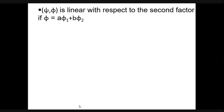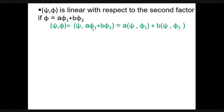Another property is that the scalar product (psi, phi) is linear with respect to the second factor phi. If the second factor is a linear combination A*phi1 plus B*phi2, then the scalar product (psi, A*phi1 plus B*phi2) expands to A*(psi, phi1) plus B*(psi, phi2). This result confirms that the scalar product is linear with respect to the second factor.